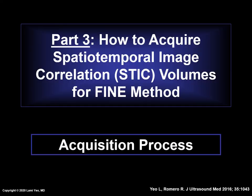In prior lectures of this series, we have reviewed how to acquire STIC volumes for the FINE method. Part 1 provided general recommendations. In Part 2, we reviewed how to enhance the overall sonographic image and discussed the region of interest, acquisition angle, and acquisition time. This lecture is now Part 3, and here we will discuss specific recommendations on STIC volume acquisition for the FINE method, such as fetal spine position and how to obtain an appropriate four-chamber view of the fetal heart.